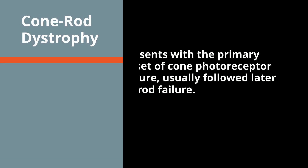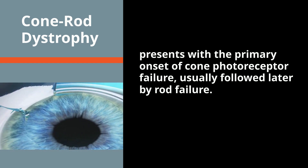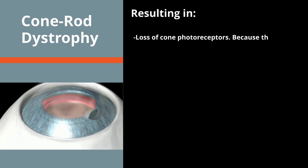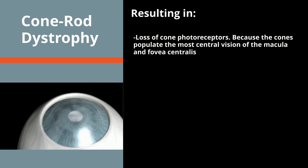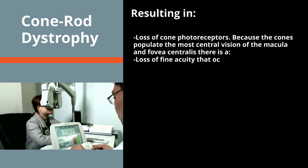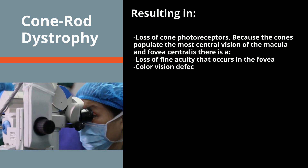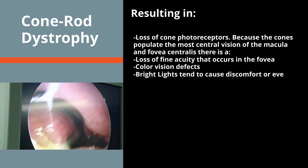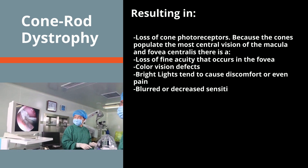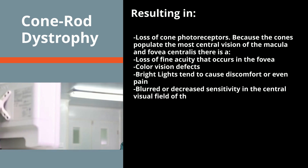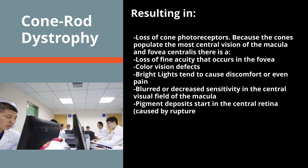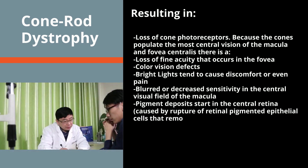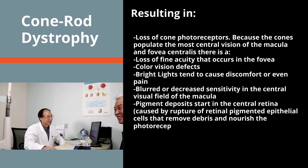Cone Rod Dystrophy presents with the primary onset of cone photoreceptor failure, usually followed later by rod failure, resulting in loss of cone photoreceptors. Because the cones populate the most central vision of the macula and fovea centralis, there is loss of fine acuity in the fovea, color vision defects, bright lights that cause discomfort or even pain, and blurred or decreased sensitivity in the central visual field of the macula. Pigment deposits start in the central retina, caused by rupture of retinal pigmented epithelial cells that remove debris and nourish the photoreceptors. Incidence: 1 in 40,000.